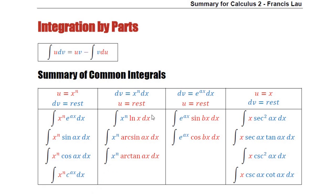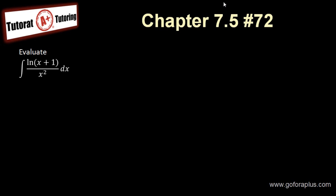But using integration by parts, I need to look at the table. The one with ln is right here. So I want my dv to be my x to the power of n. So I know that my dv is going to be x to the power of minus 2 dx — this is the bottom part right here — so that my u is equal to ln of x plus 1.